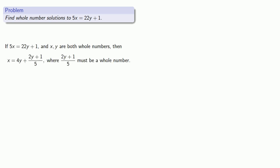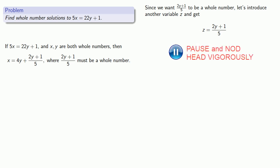Well, now let's think about that. Since we want 2y plus 1 over 5 to be a whole number, let's introduce another variable, z, and set z equals 2y plus 1 over 5. And since we want to know what y is, let's solve this equation for y.